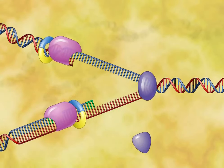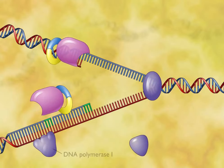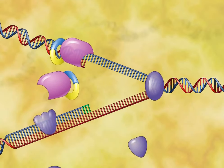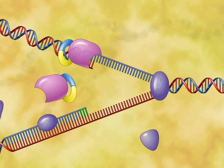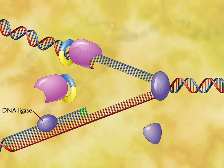it is replaced by DNA polymerase 1, which removes the RNA and replaces it with DNA. DNA ligase then attaches and forms phosphodiester bonds.